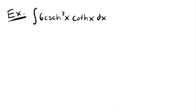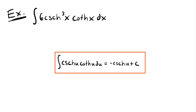Next, we want to solve the integral of 6 times hyperbolic cosecant cubed of x times hyperbolic cotangent of x, dx. You might initially think to use the integration rule for hyperbolic cosecant times hyperbolic cotangent, but we have hyperbolic cosecant cubed of x — the cosecant is cubed — so this integral cannot be integrated using that rule directly.